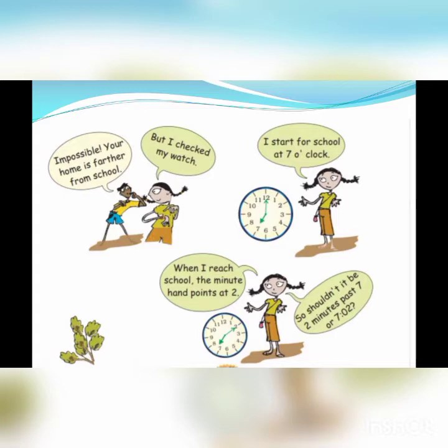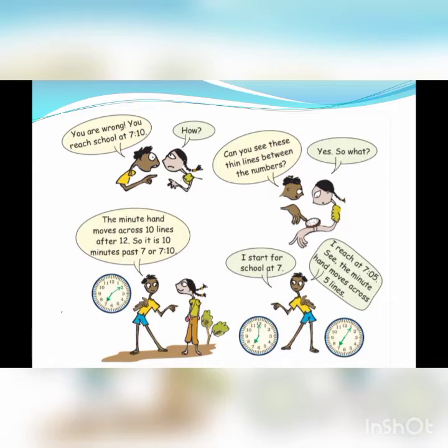Let's move further in our story. Pamposh said, 'You are wrong. You reach school at 7:10.' Shazia asked him, 'How?' He explained to her how to read time. 'Can you see these thin lines between the numbers?' She replied, 'Yes. So what?' He said, 'The minute hand moves across 10 lines after 12. So it is 10 minutes past 7, not 2 minutes past 7. I start for school at 7 and I reach school at 7:05. See, the minute hand moves across 5 thin lines.'